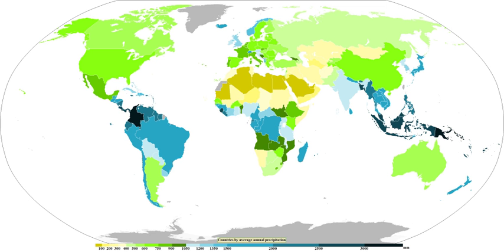Convective rain, or showery precipitation, occurs from convective clouds, such as cumulonimbus or cumulus congestus. It falls as showers with rapidly changing intensity. Convective precipitation falls over a certain area for a relatively short time, as convective clouds have limited horizontal extent. Most precipitation in the tropics appears to be convective; however, it has been suggested that stratiform precipitation also occurs. Grapple and hail indicate convection.